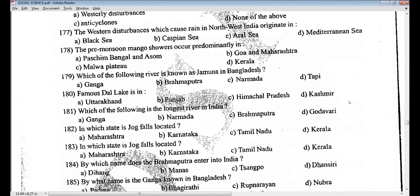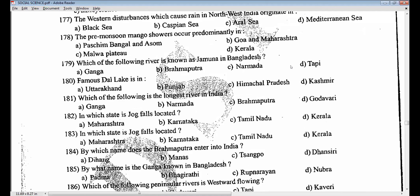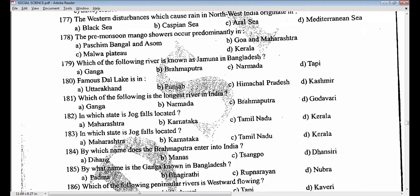Pre-monsoon showers occur predominantly in Goa and Maharashtra — correct. Well tried. If your answer is wrong, don't get disappointed. It's a good way to learn in both ways — whether right or wrong.